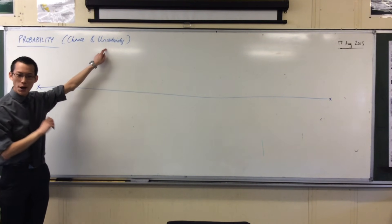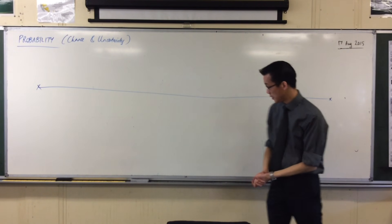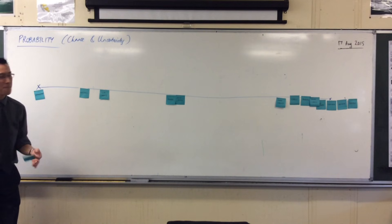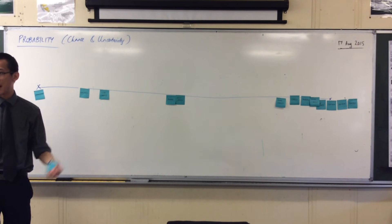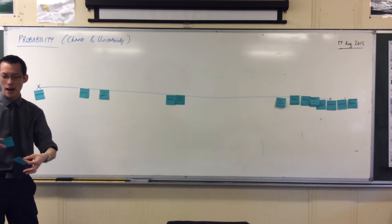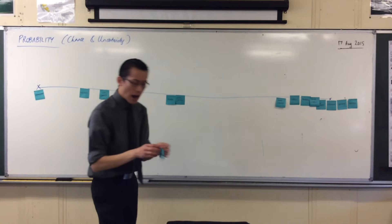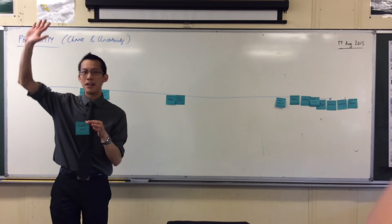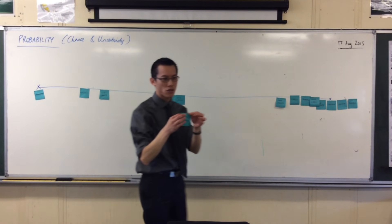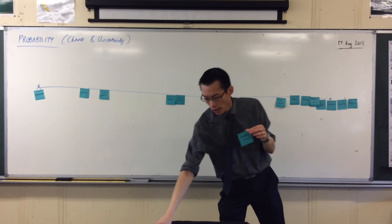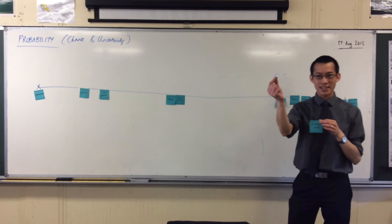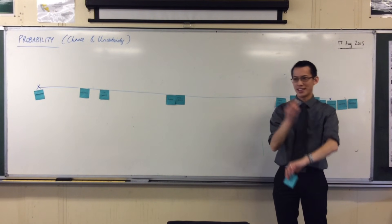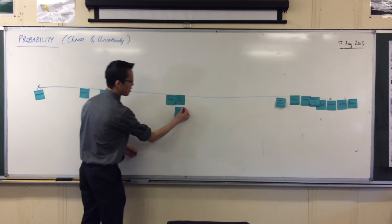If you're ready, come and get a post-it note. I have some words that we use in our language to talk about chance and uncertainty — some are a bit old-fashioned. For example: 'even odds.' Does anyone know what that means? Nathan, how would you describe even odds? Even odds means you have just as likely a chance of getting one outcome versus the others — so even odds should be about here in the middle.